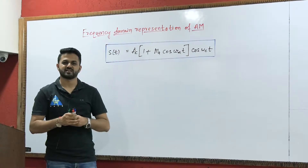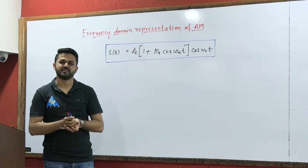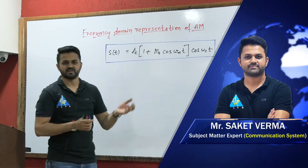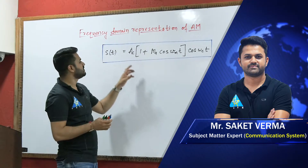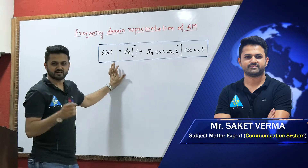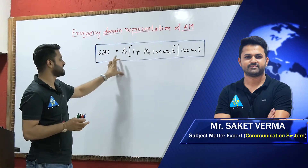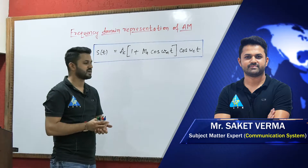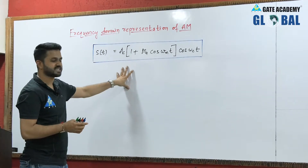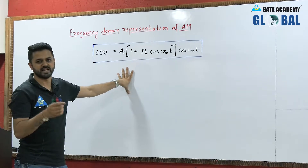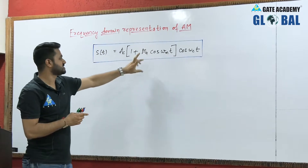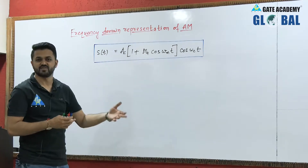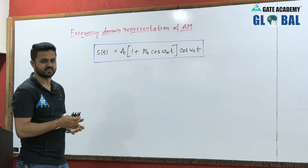In this topic we will discuss the bandwidth requirement of AM signal and the frequency domain representation. We have the expression for single tone modulating signal of AM: AC(1 + MA cos ωM t) cos ωC t. This is the standard expression and we should remember it because it is a very important one and many things will be derived from this equation.